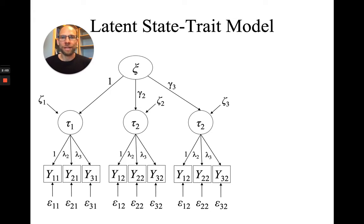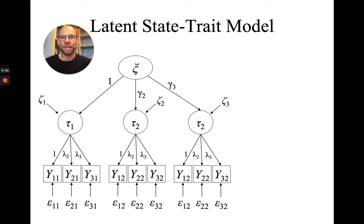In addition, we have first-order residuals indicated as zeta — so-called state residual factors — that account for residual variance in the latent state factors not explained by the trait factor. The latent state residuals zeta 1, zeta 2, and zeta 3 account for situation-specific effects and/or person-by-situation interaction. This model allows us to separate trait and state residual variance components by introducing the second-order trait factor and those state residual factors.